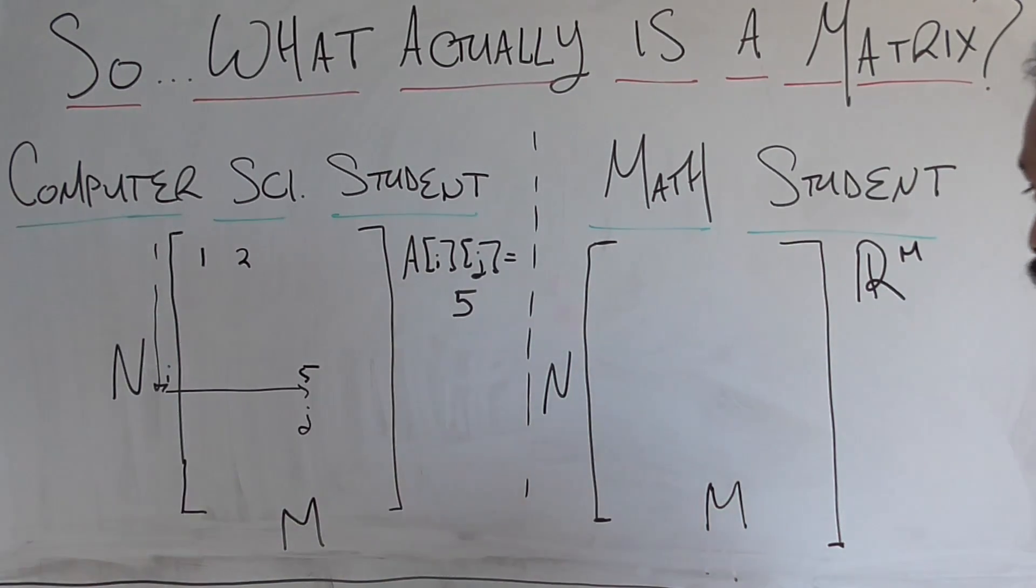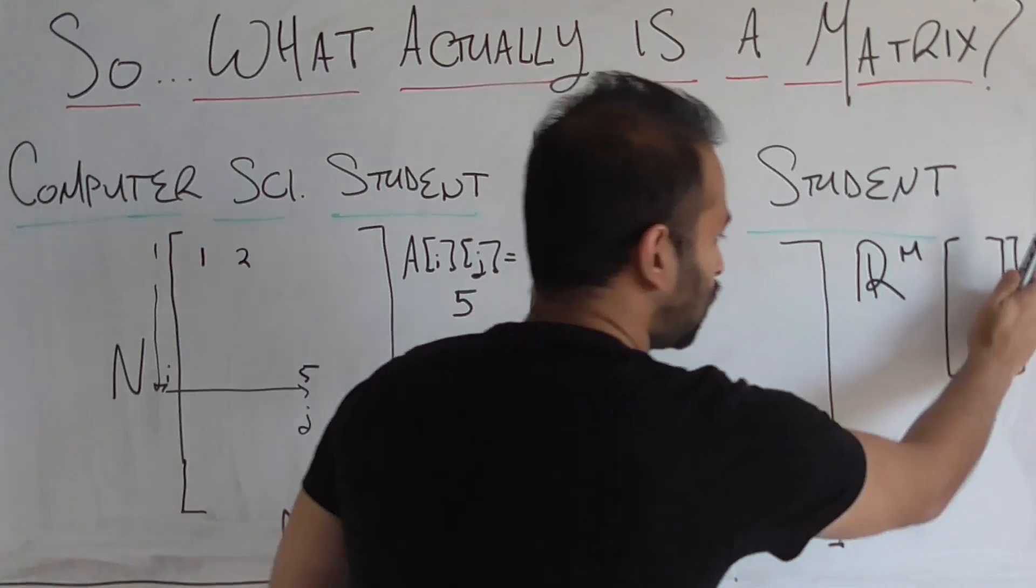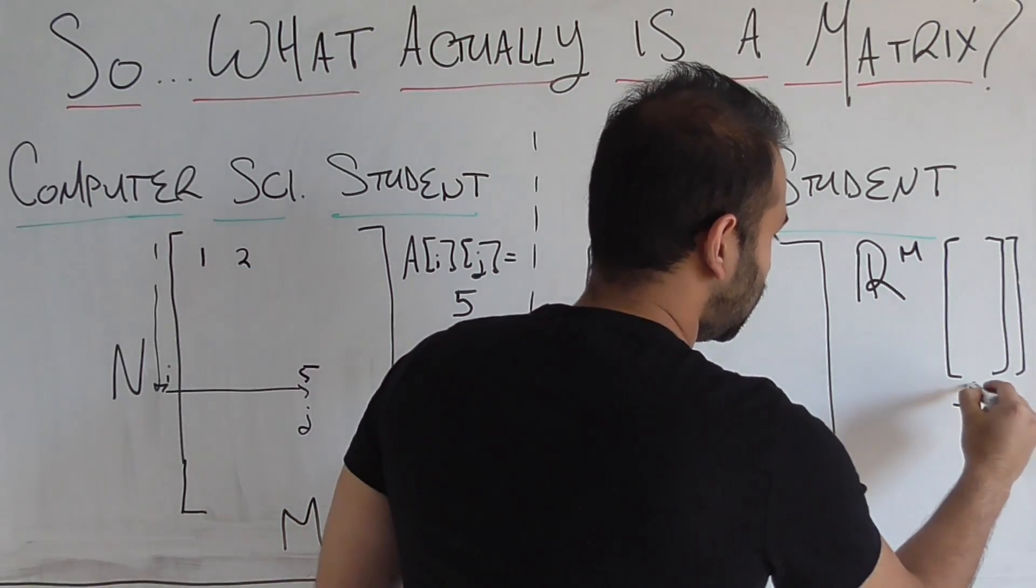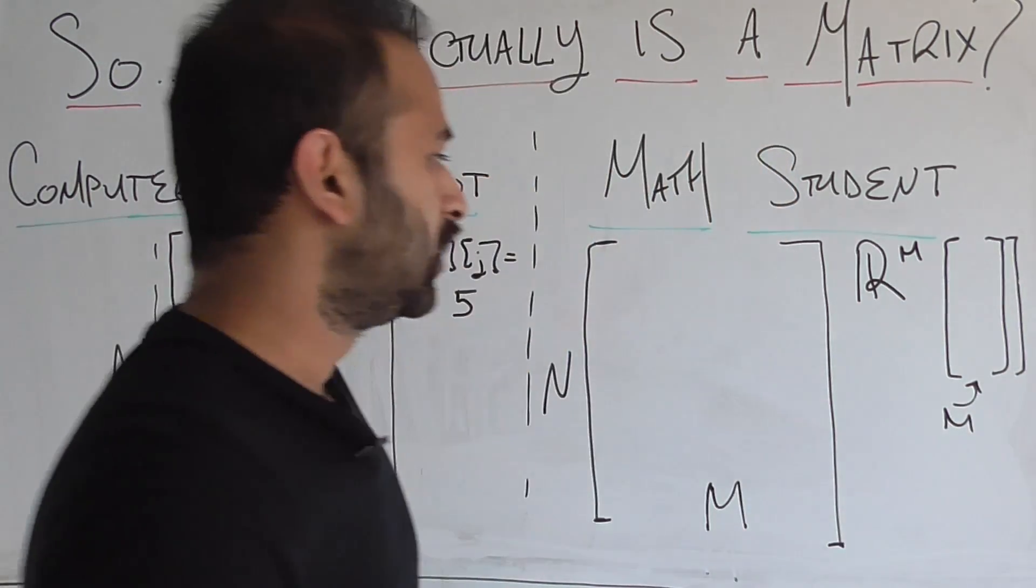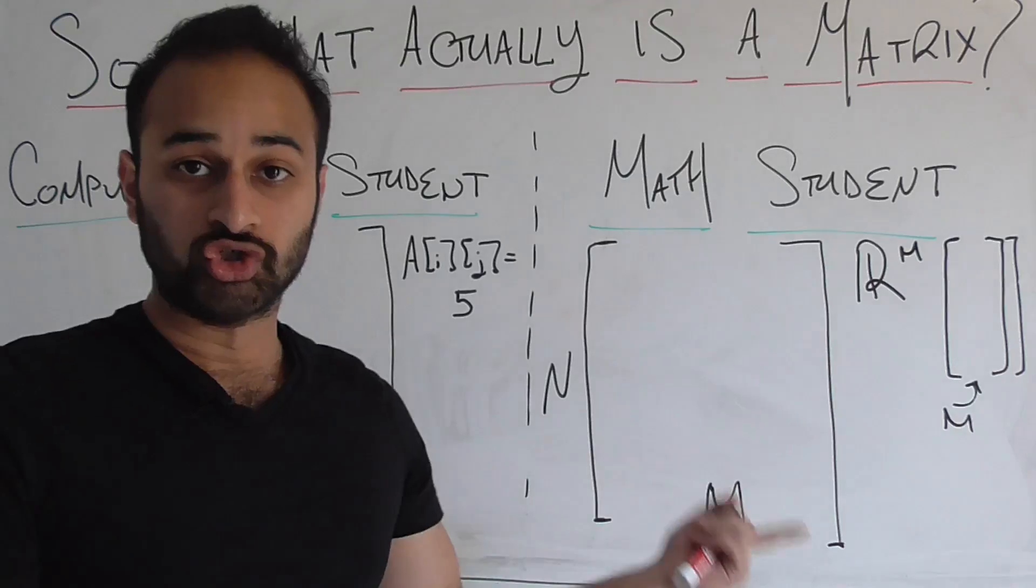And for those of you who need a refresher, R^m is basically the space of real numbers, a vector that has m components in it. Can you see that there? So yeah, this got cut off. This is a vector that has m different components in it. So this matrix, its job, its role, is basically to take any vector that lives in R^m,